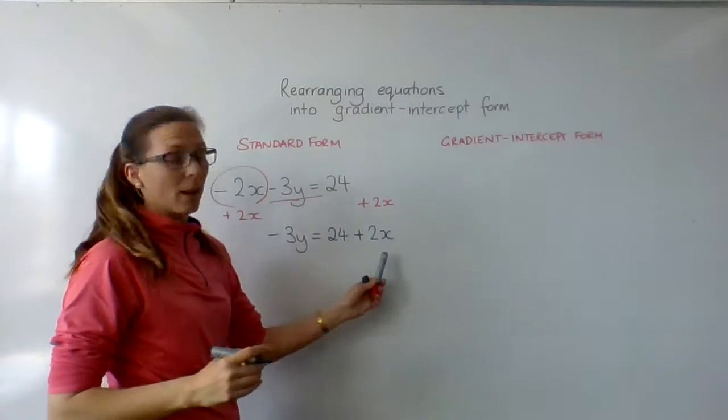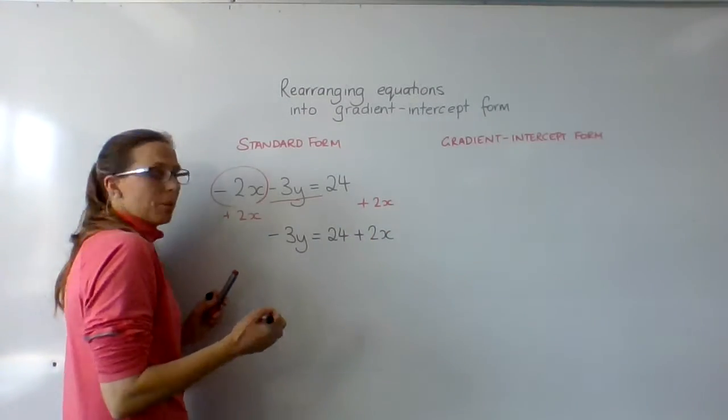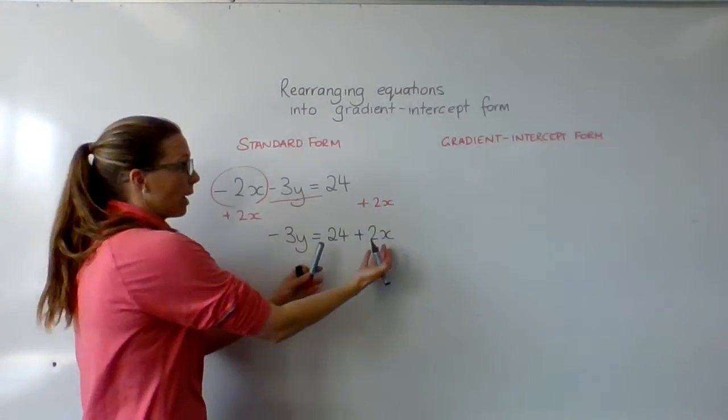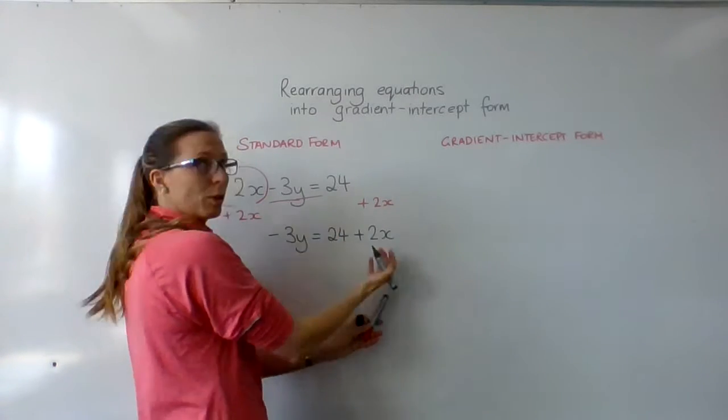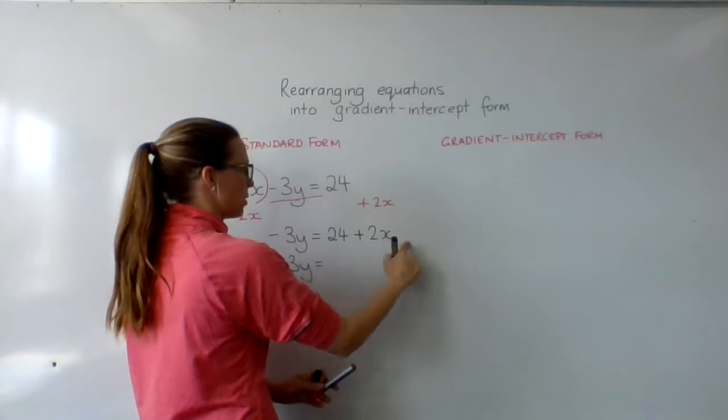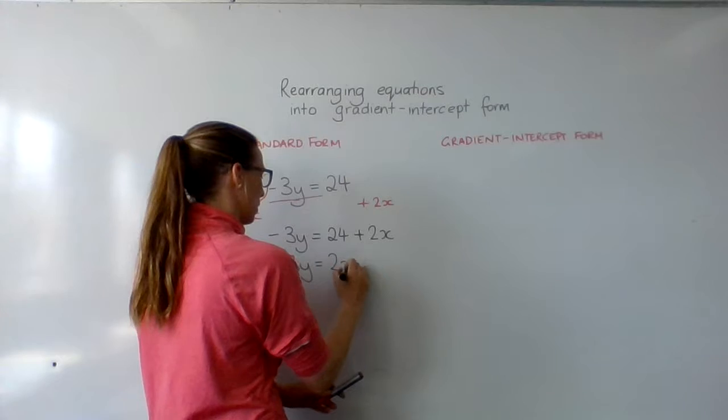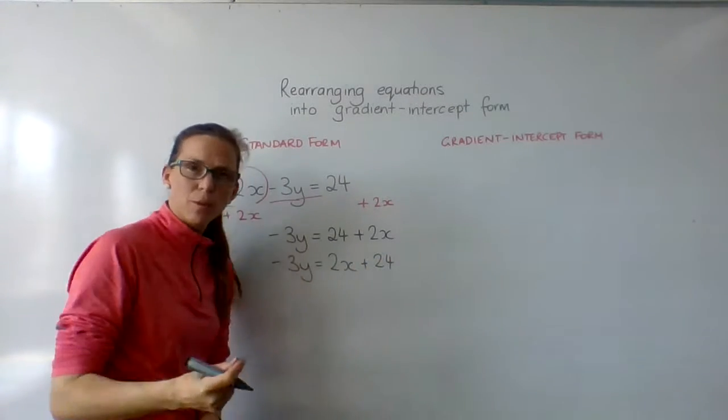Remembering that these are not like terms, so we can't collect them. The next step is that you might like to put your gradient, the term with the gradient, before your intercept. So let's just put that in order. Let's do the 2x at the front and the 24 behind. Most of you prefer it that way.